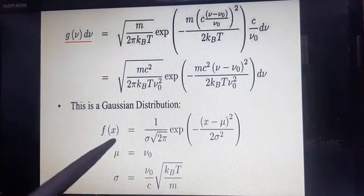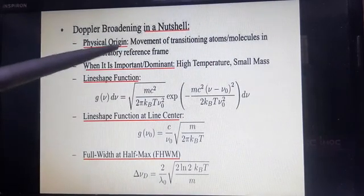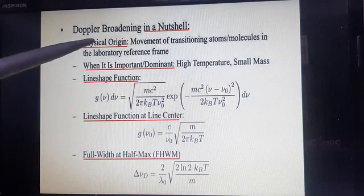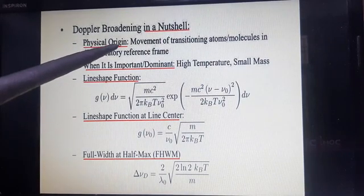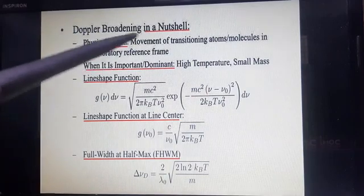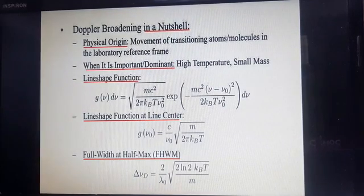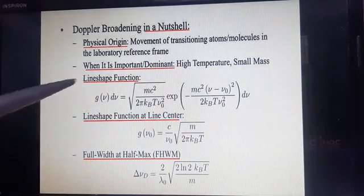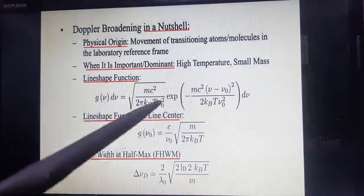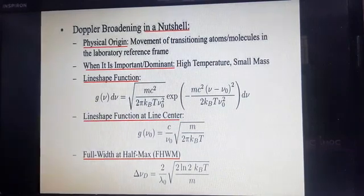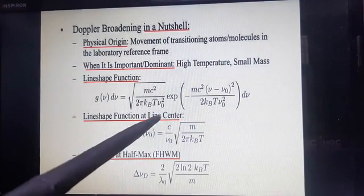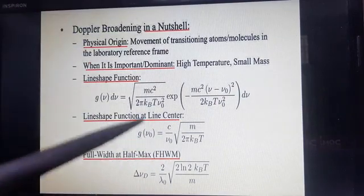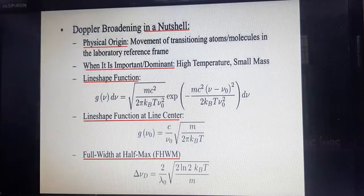Using these formulae, we obtain g(nu)dnu, the spectral line function, which is a Gaussian distribution function. In summary, Doppler broadening is characterized by three points: physical origin is the movement of transitioning atoms or molecules in the lab frame; it is dominant at high temperature and small masses; and the line shape function is Gaussian as derived using Maxwell distributions, with special cases for line center and FWHM.